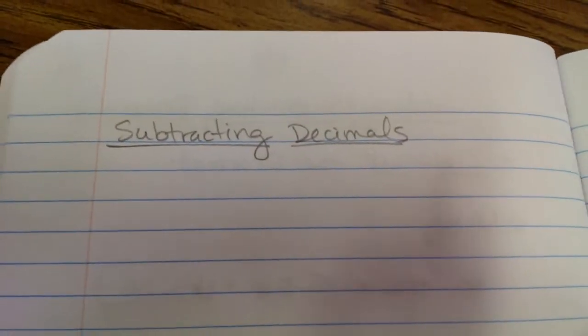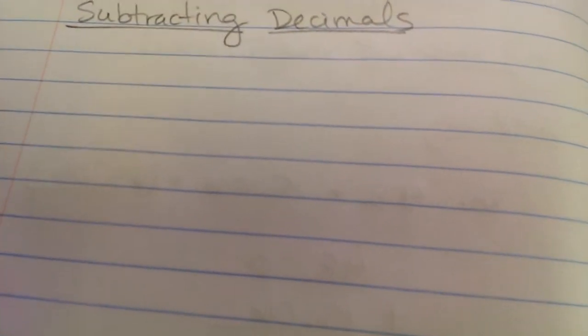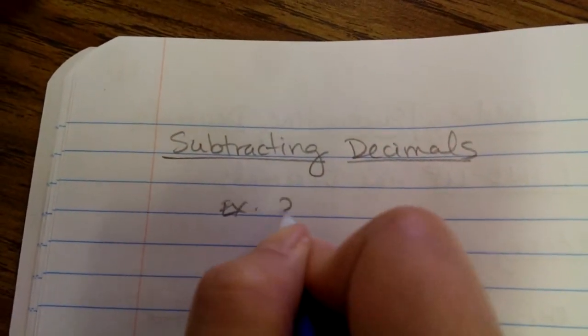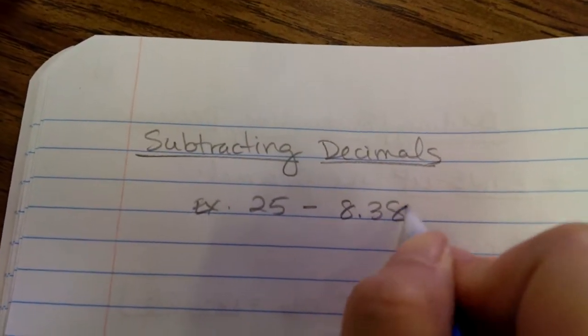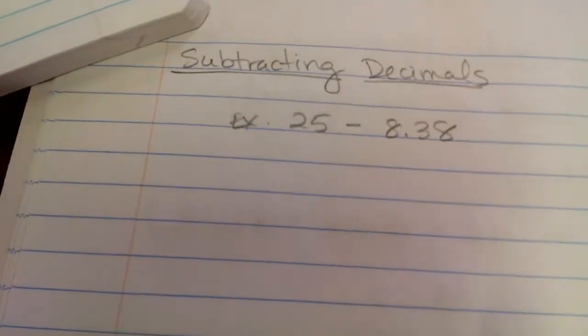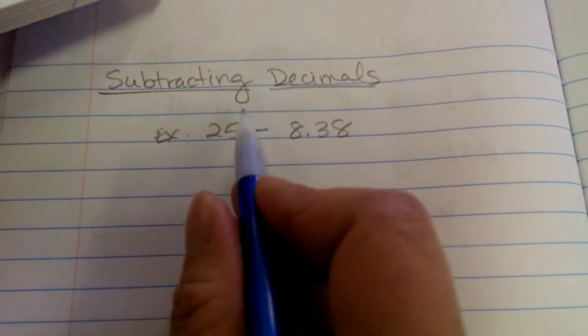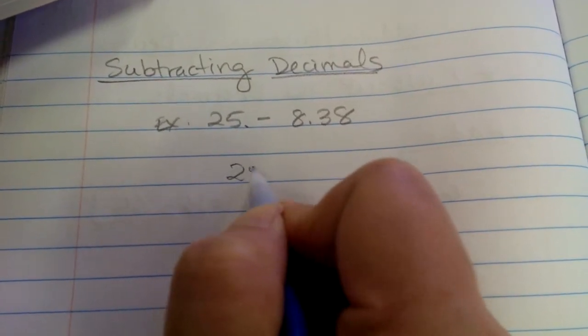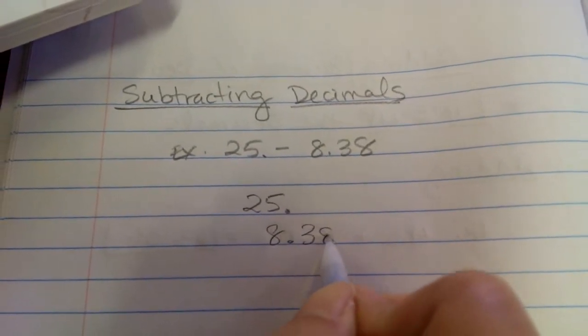Let's do a few examples for subtracting decimals. So our first example will be 25 minus 8 and 38 hundredths. So, again, we have to line up the decimals. If you don't see the decimal, where is it? It is back here. So when we line up the decimals, our decimals there for that one, and then 8 and 38 hundredths, subtract.